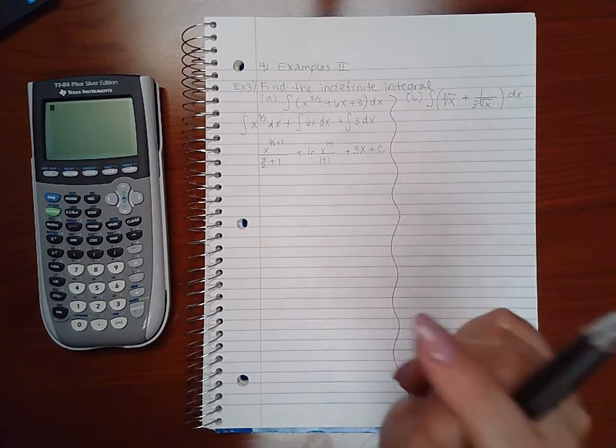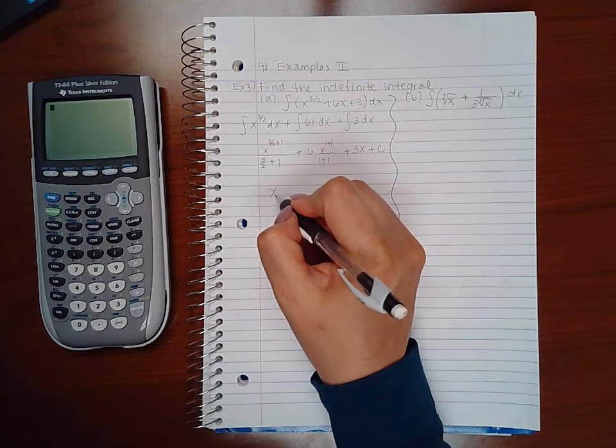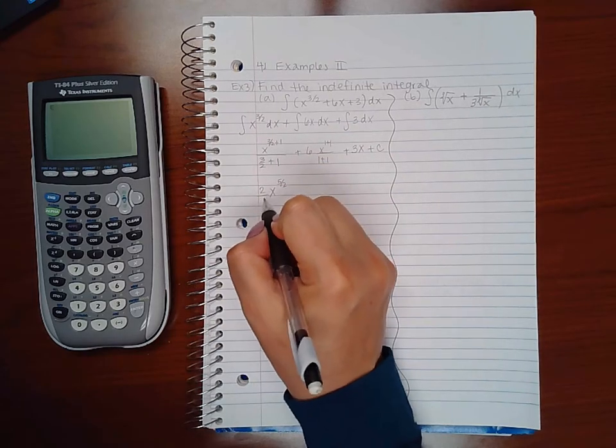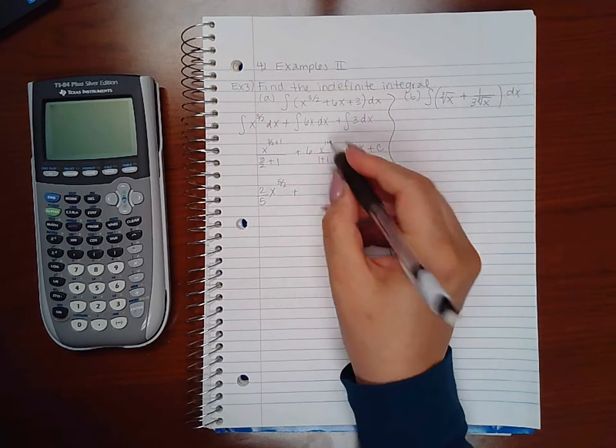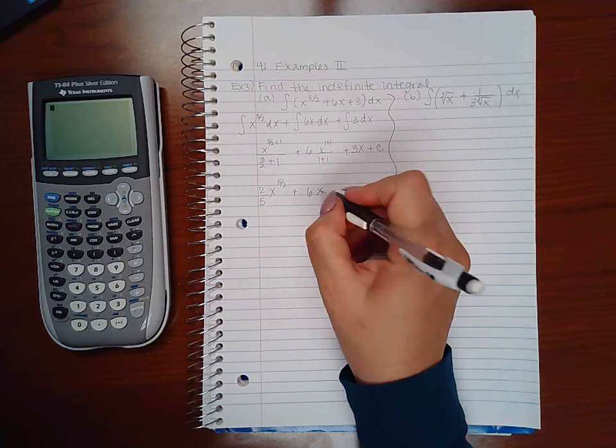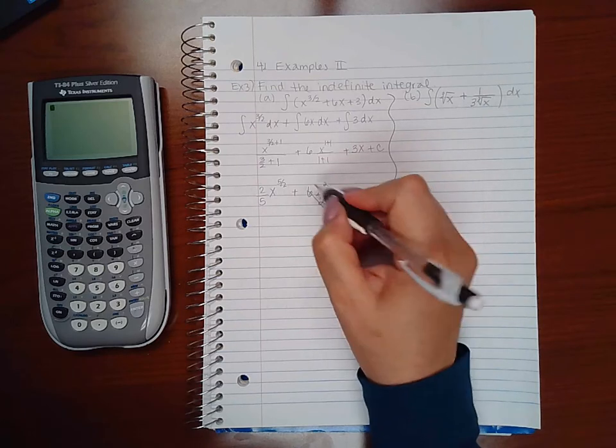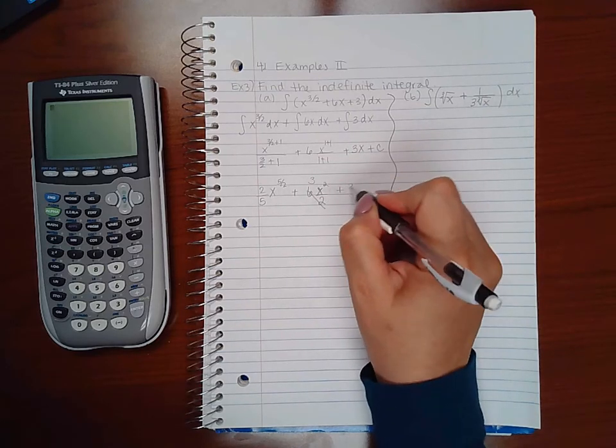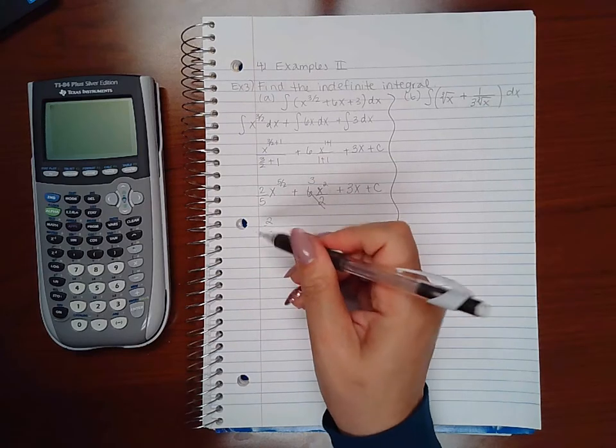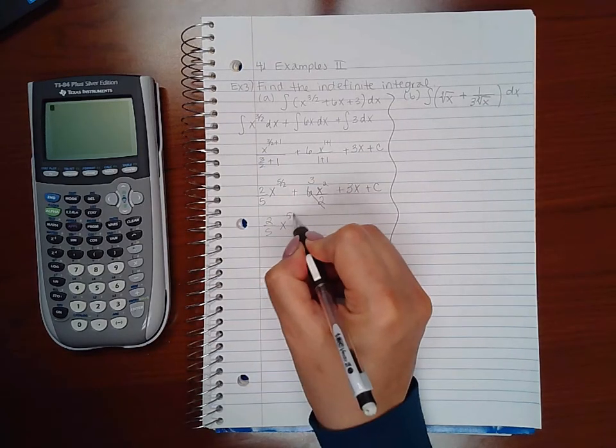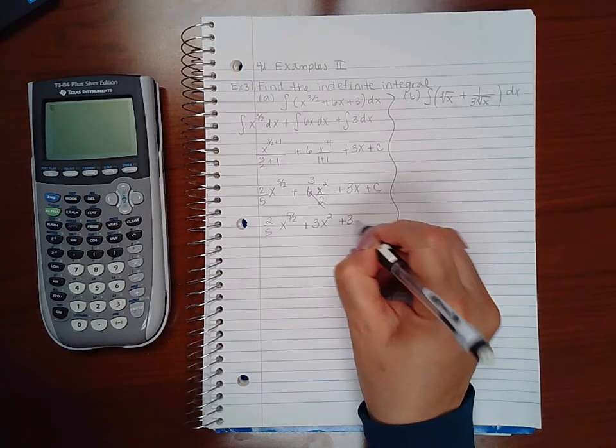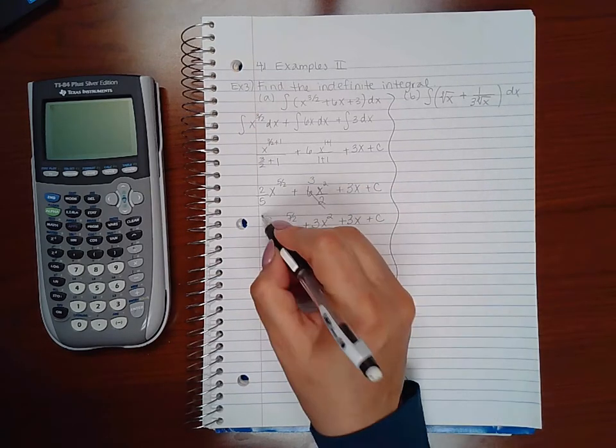Because I've applied all my integration rules, here I get x to the five halves. Instead of dividing by five halves, I'm going to multiply by two fifths. Here I'm going to get six x squared over two, which simplifies to give me a three and a three x plus C. So my final answer is two fifths x to the five halves plus three x squared plus three x plus C. This is the anti-derivative or indefinite integral of this function inside the parentheses.